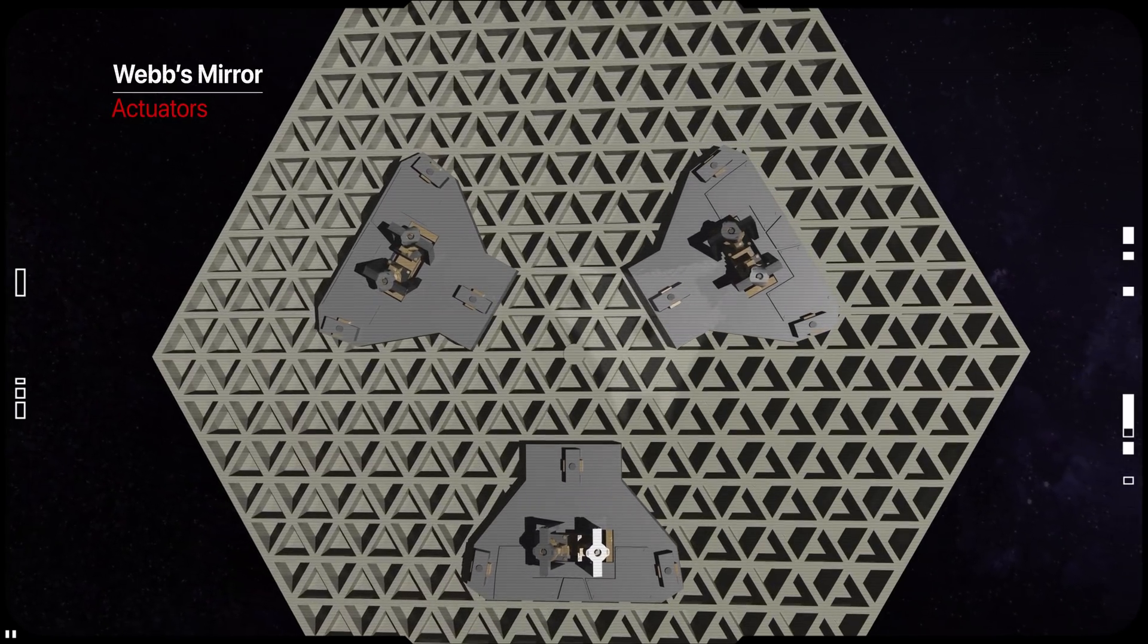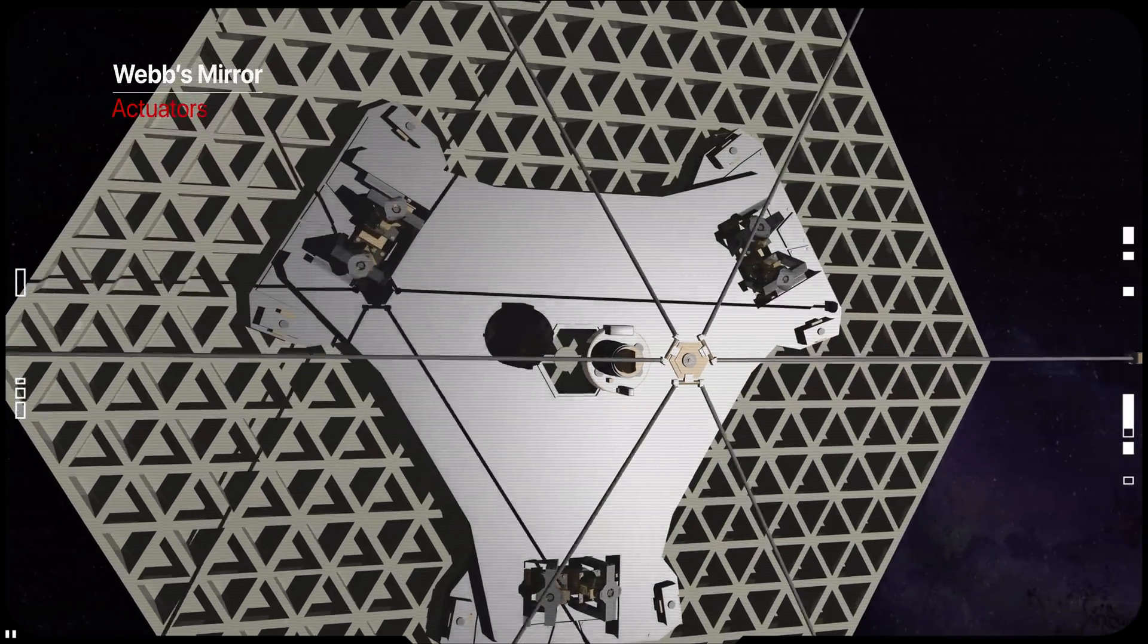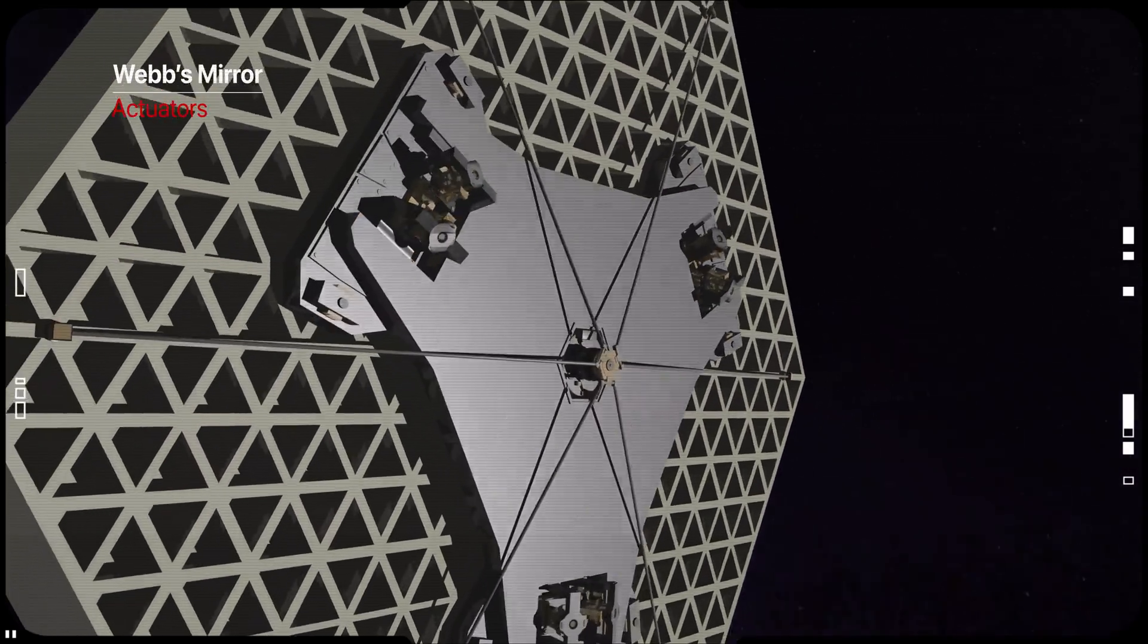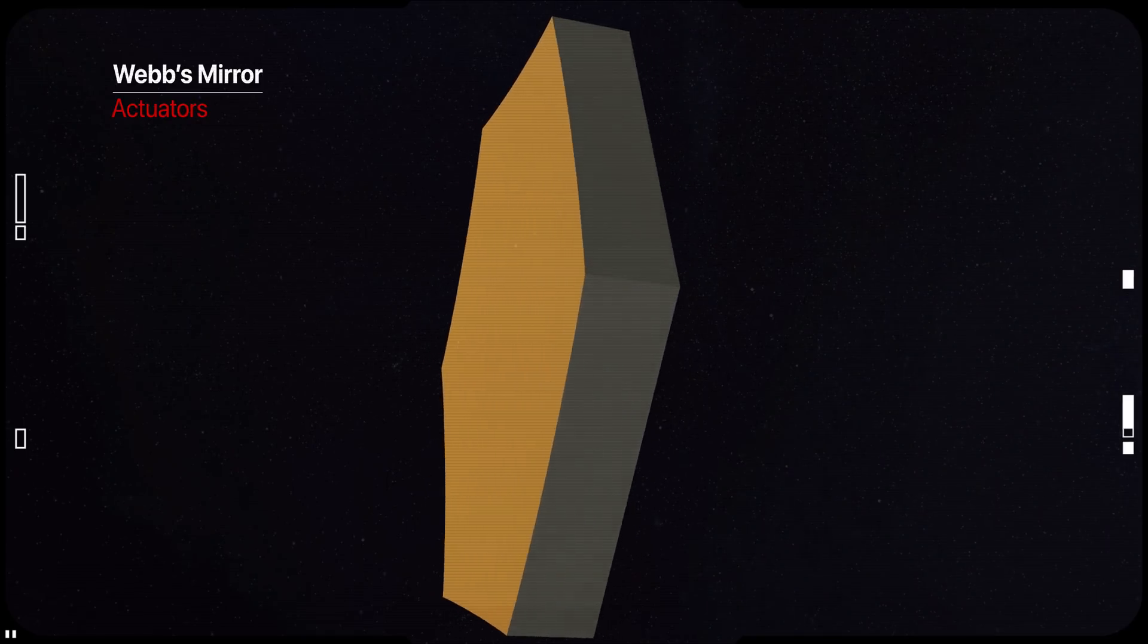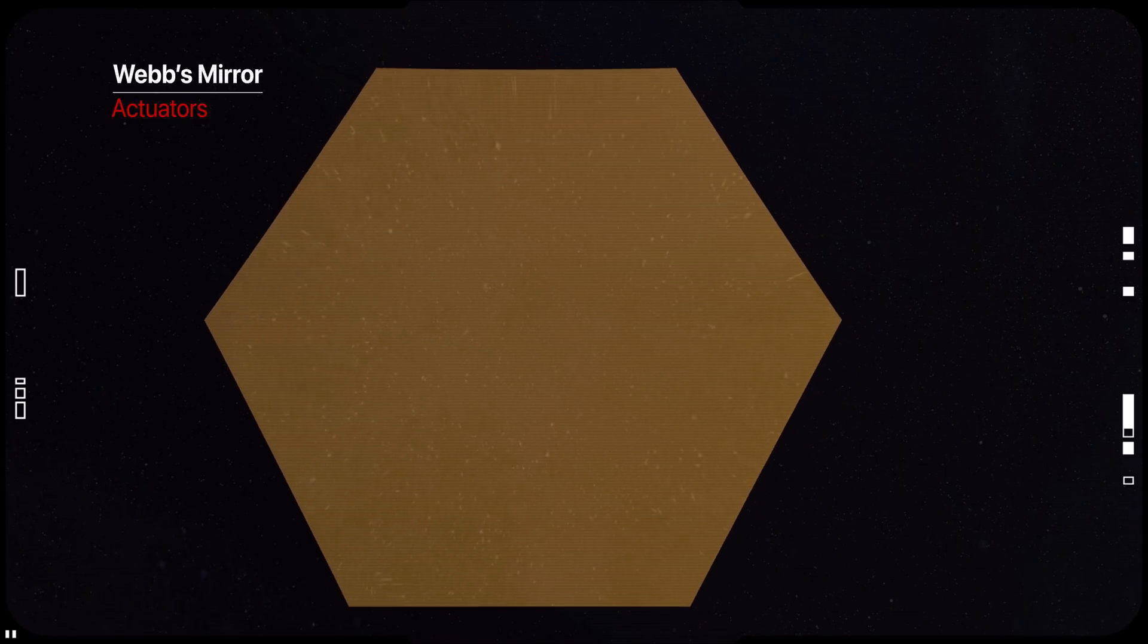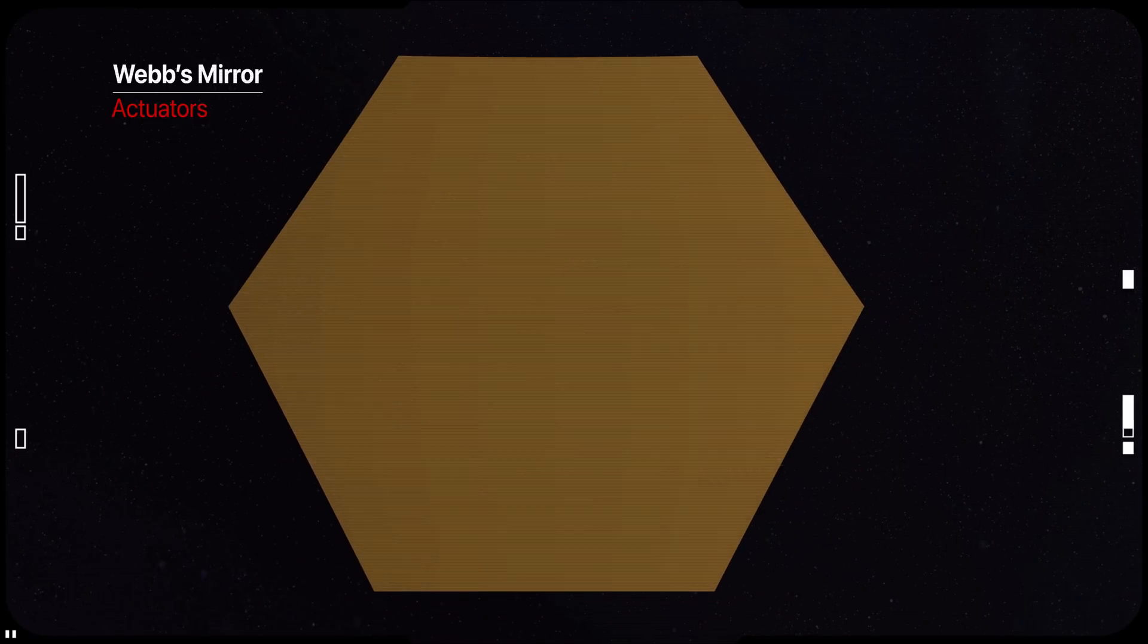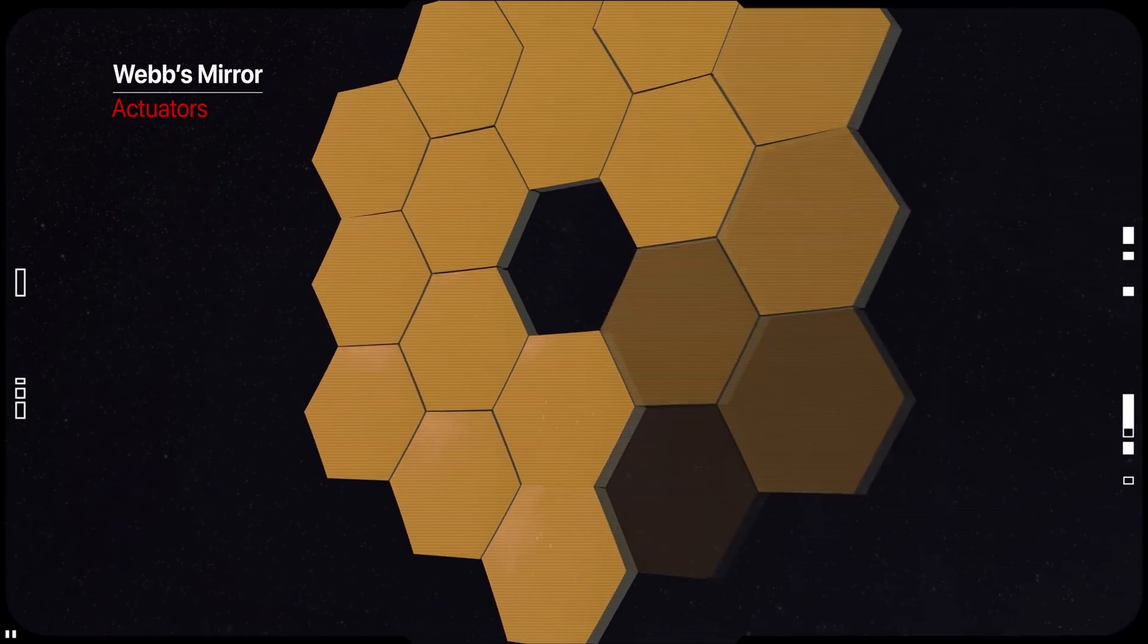Actuators or tiny mechanical motors provide the answer to achieving a single perfect focus. The primary mirror segments and secondary mirror are moved by six actuators that are attached to the back of each mirror piece. The primary mirror segments also have an additional actuator at its center that adjusts its curvature. The telescope's tertiary mirror remains stationary.